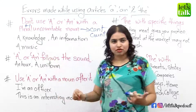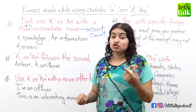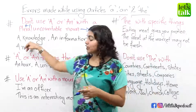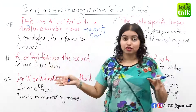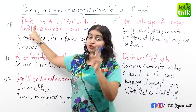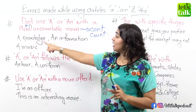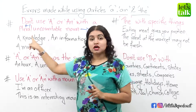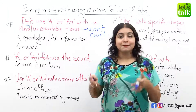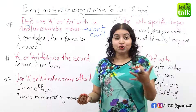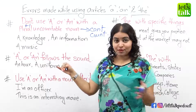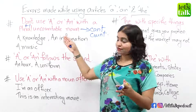You can't count knowledge. You can't say one knowledge, two knowledge, three knowledges. You just say knowledge because you can't count it. As per the rule, you cannot use a or an before this uncountable noun. You can't say "a knowledge" or "please give me a knowledge." You could say "please give me knowledge" or "please give me some knowledge," but you can't use a before it.